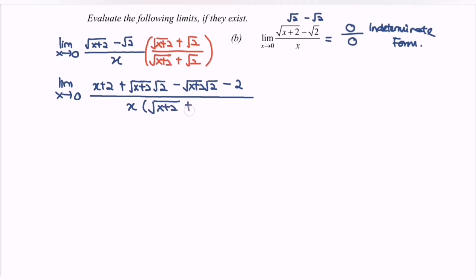Remember, there is no need to expand the denominator, as that would complicate the situation. So the limit when x approaches 0 is then simplified by canceling x from numerator and denominator.